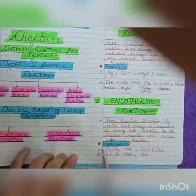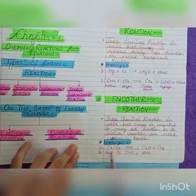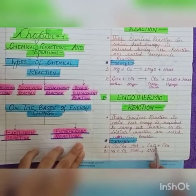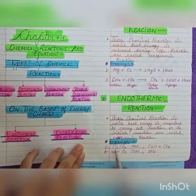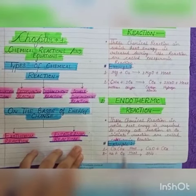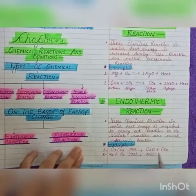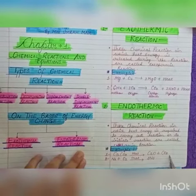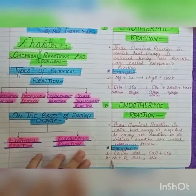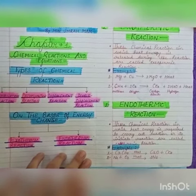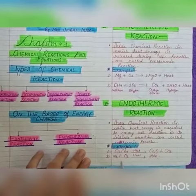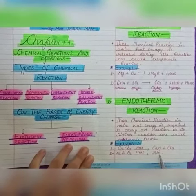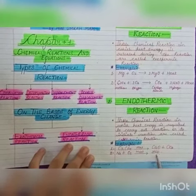For example: CaCO3 gives CaO plus CO2. When we heat calcium carbonate, the products formed are calcium oxide plus carbon dioxide. Second example: N2 plus O2 gives 2NO. When nitrogen is heated with oxygen, the product formed is nitric oxide.